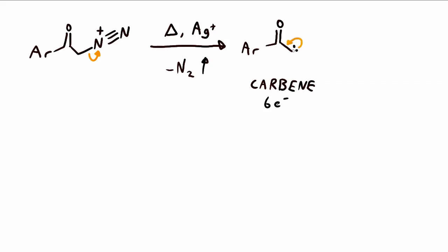And so what happens is the electrons from the carbene make another bond to the carbon next door, the carbonyl carbon. At the same time, the aryl group sort of migrates along that bond, resulting in the formation of a ketene.